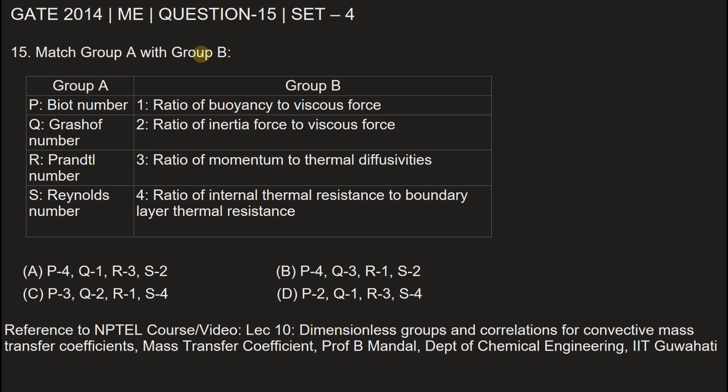Match group A with group B. In group A, we have dimensionless numbers: Biot number, Grashof number, Prandtl number, and Reynolds number. In group B, we have the definitions of these numbers. Let's see all the numbers one by one.